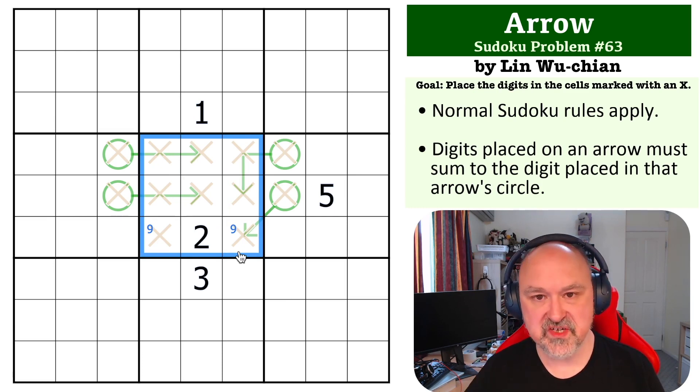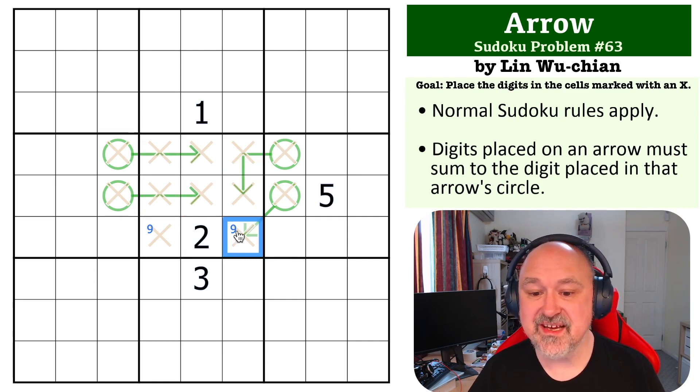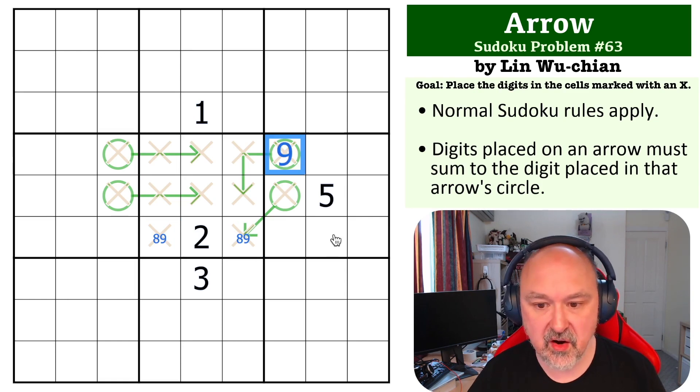All of the digits one to nine sum to 45. If you subtract the 28, which is the maximum you can put in those cells, from 45, you are left with 17. But 17 is the maximum you can put into two digits, so these become eight-nine.